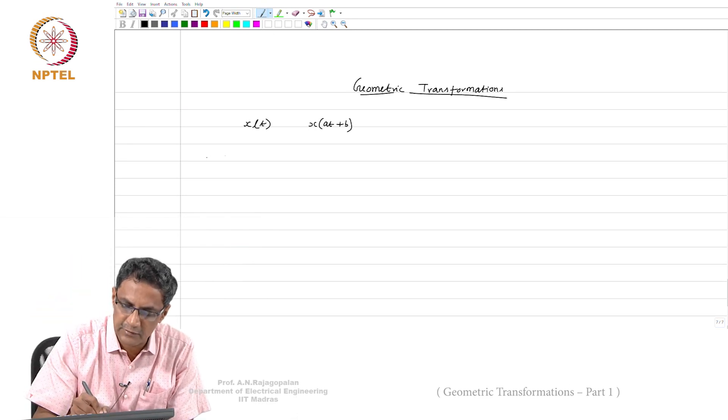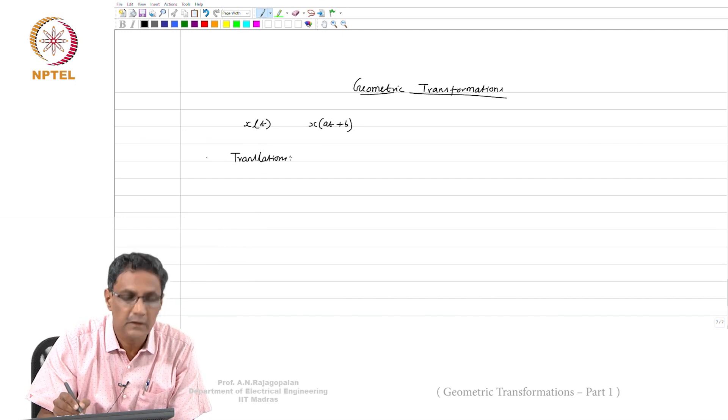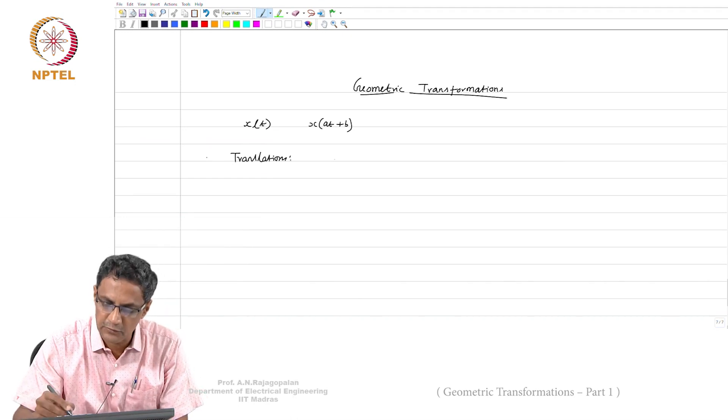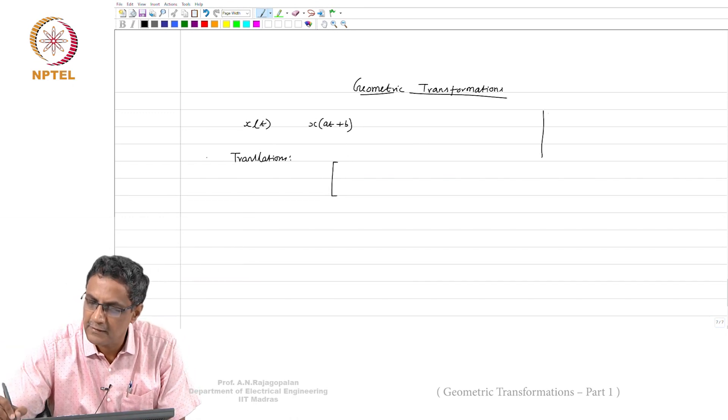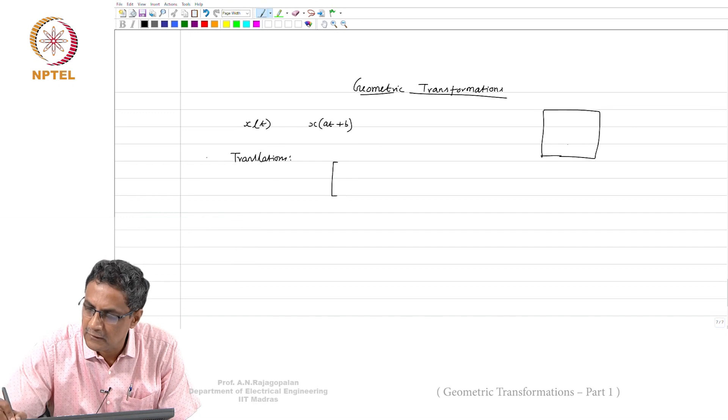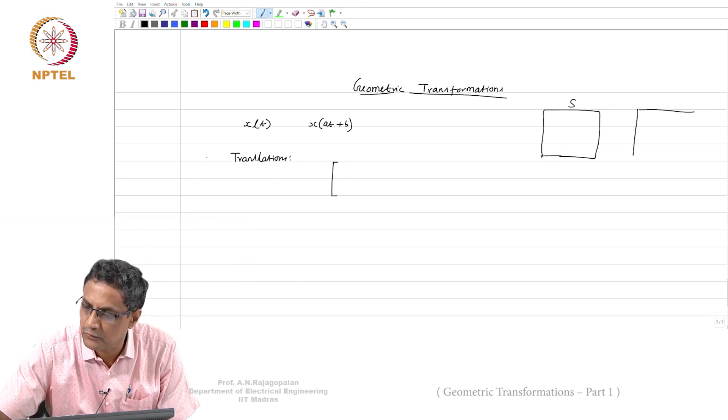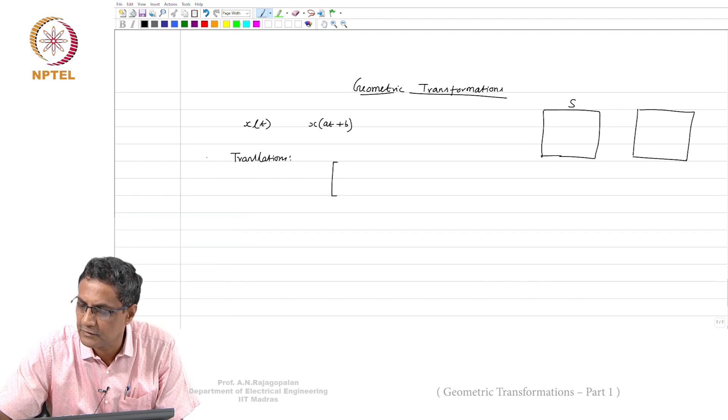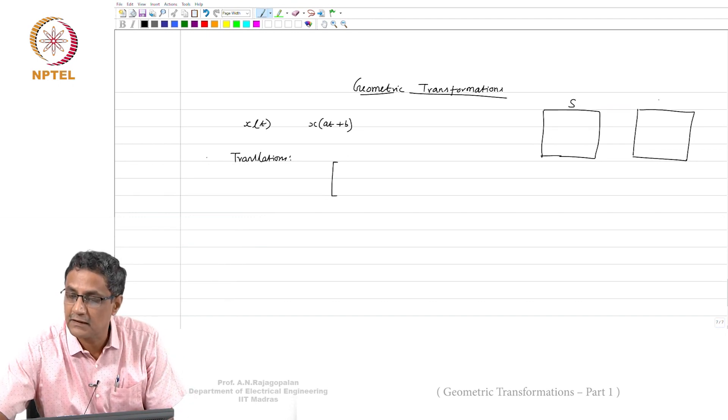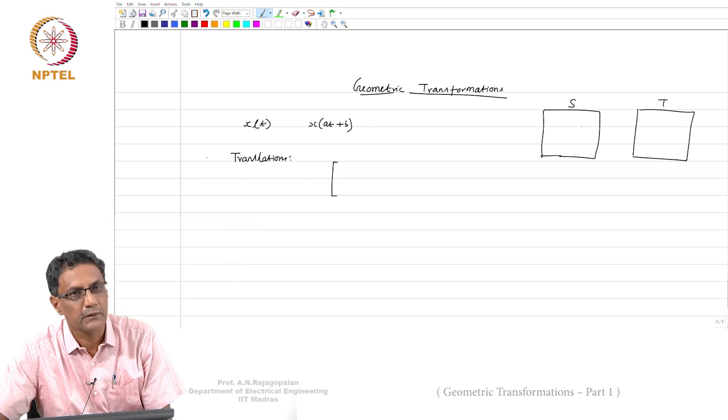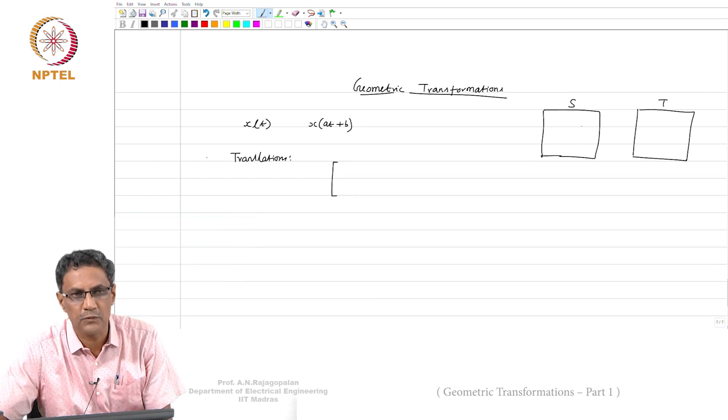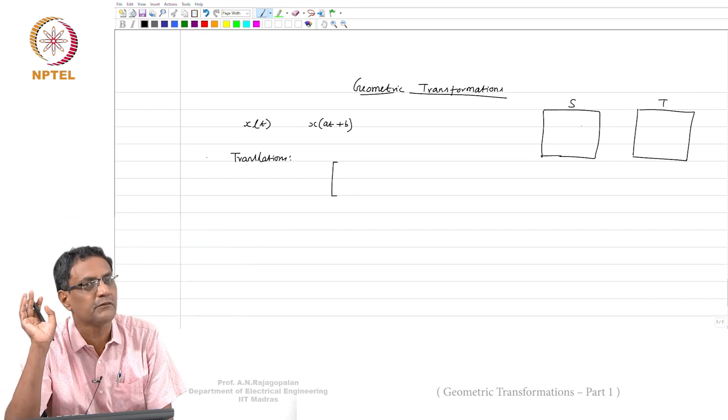One of the simplest things that you would have seen is what is called translation of an image. What we really mean by that is, it's like saying that I have an image, call that a source image. I have another image which is a target image. Given the source image, I want to be able to build a target image. Now, under what circumstances do you want to do this?